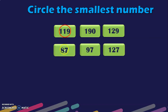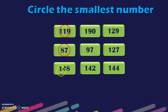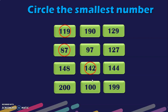Let us quickly do some exercises. For 87, 97 and 127: we have two 2-digit numbers and one 3-digit number. We can ignore 127 since it is definitely greater. Comparing 87 and 97, in the 10s place we have 8 and 9, so 87 is lesser than 97 — meaning 87 is the smallest. Next: 148, 142 and 144. The 100s and 10s places are the same for all three, so look at the 1s place: 8, 2 and 4. The smallest is 142. Last example: 200, 100 and 199. The answer is 100.